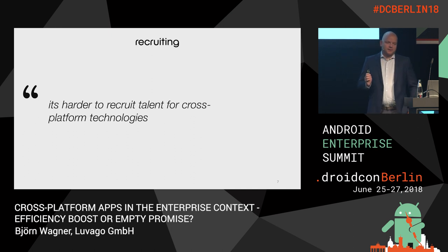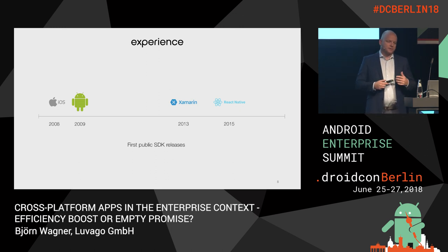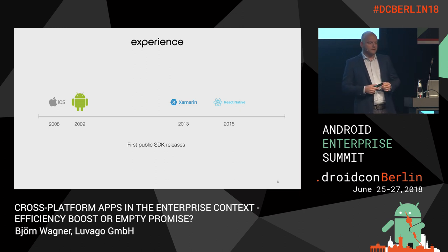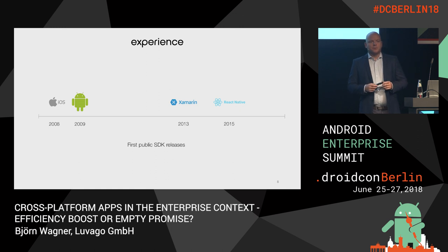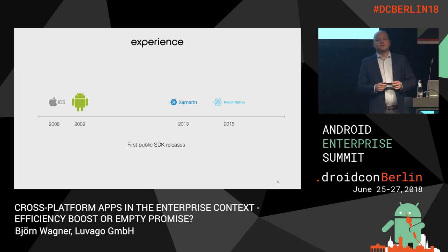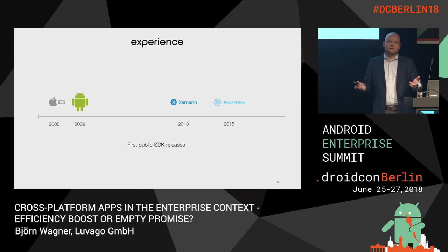Which brings me to the next question, and this is experience. I put a simple timeline of the first public SDK releases, when the developer community began to grow. iOS started in 2008, then Android came a year later. The first cross-platform major release came in 2013, and React Native has really only been public for about three years. Enterprise companies tend to hire for lead positions people with a lot of experience in their field, and this is often a position they struggle with when it comes to newer frameworks. So if you have that kind of policy in the company, that makes the recruiting process even harder.